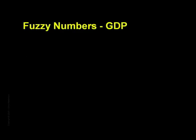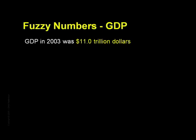Gross domestic product, or GDP, is how we tell ourselves that our economy is either doing well or doing poorly. In theory, GDP is the sum total of all value-added transactions within our country in any given year. But here's an example of how far from reality GDP has strayed. The reported number for 2003 was a GDP of $11 trillion, implying that $11 trillion of money-based, value-added economic transactions had occurred. However, nothing of the sort happened. That $11 trillion included $1.6 trillion of imputations, where it was assumed that economic value had been created but no actual transactions took place. The largest of these imputations was the value that the owner of a house receives by not having to pay themselves rent.